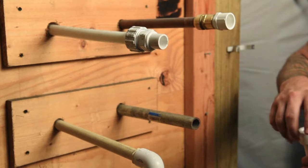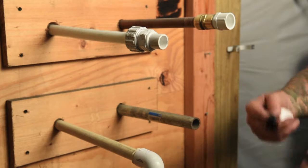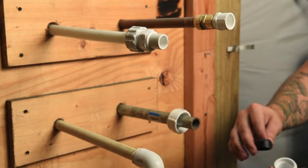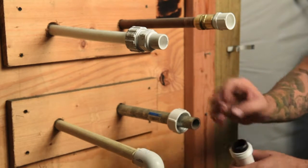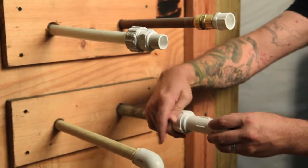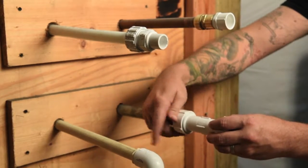With galvanized a compression fitting is used as well. However this one just consists of a compression nut, a rubber gasket, and the PVC adapter. The compression nut is threaded onto the adapter, compressing onto the galvanized.